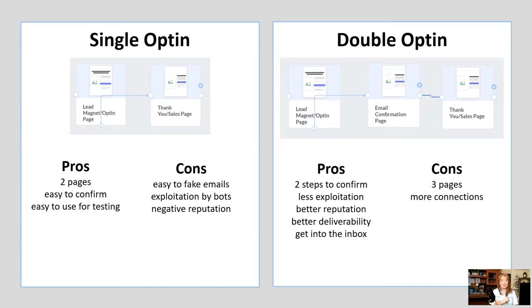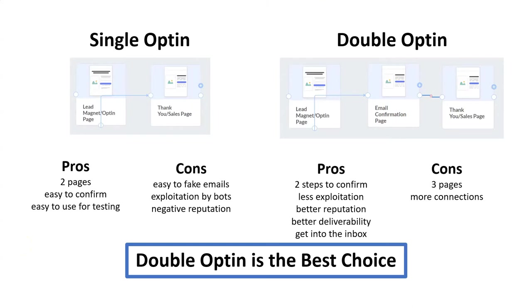The cons of double opt-in are that there are three pages instead of two, and a little bit more setup connection. But double opt-in is definitely the best choice because it's going to give you the most benefits — getting a good, clean list to send out your emails to, and hopefully ending up in the inbox instead of spam. That's the difference between a single opt-in and a double opt-in subscriber list. I hope that helped you in deciding what kind of list to build with Mailing Boss and Builderall.